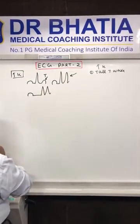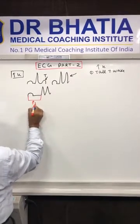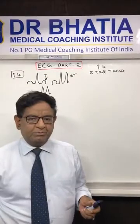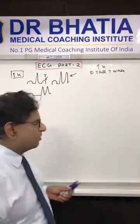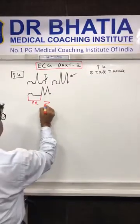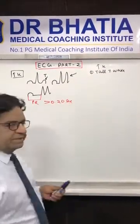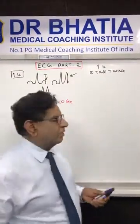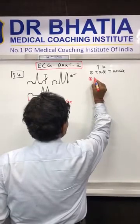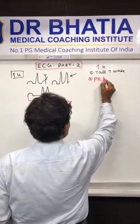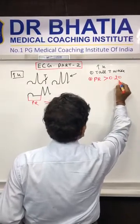After that, if more hyperkalemia occurs, there is a prolonged PR interval. This is the PR interval — it is prolonged. As you know, a prolonged PR interval is also known as first degree heart block. That means if the PR interval is more than 0.20 seconds, that is first degree heart block. So the second finding is PR interval prolonged more than 0.20 seconds.